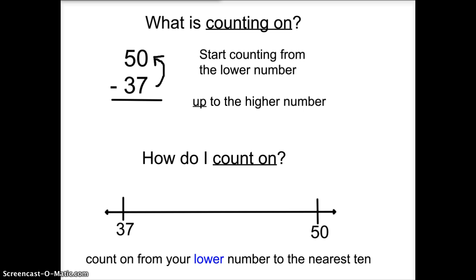Count on from your lower number to the nearest 10. In this case, it's 37, and you'll be counting up to 50. Here we go. 38, 39, 40.